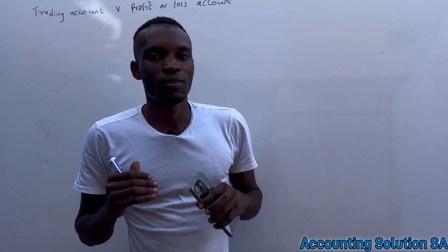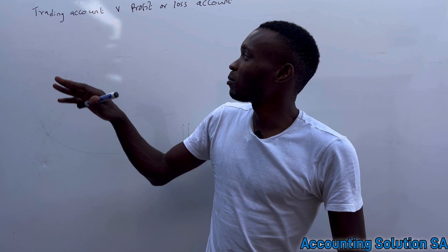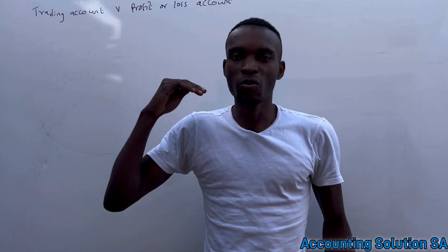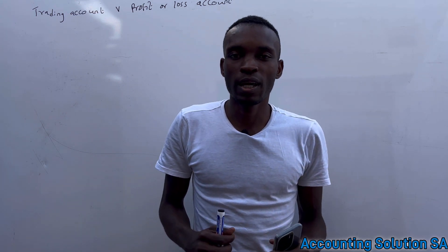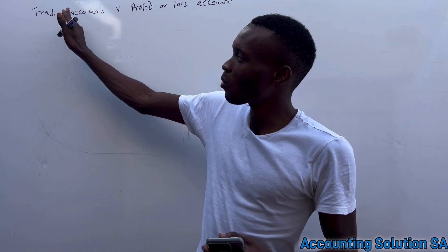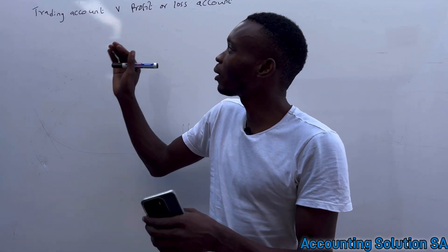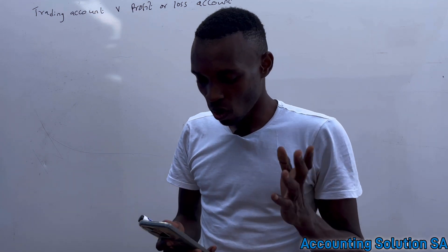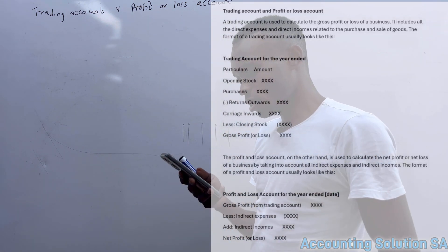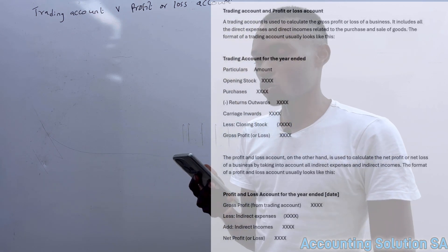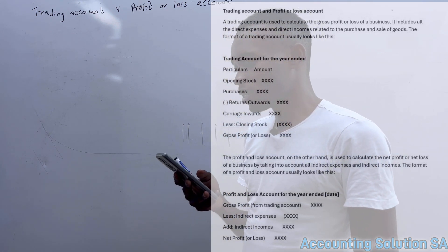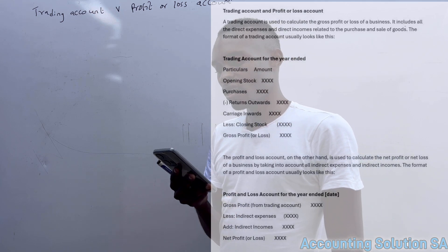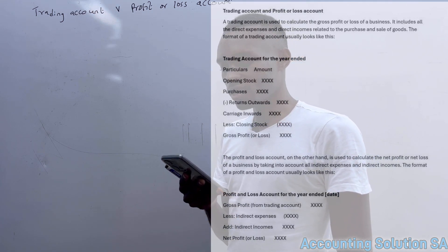In this video we are going to cover the difference between a trading account and a profit or loss account. Before we start with our example, I want us to understand what we are looking for when we prepare a trading account and what we are looking for when we prepare a profit or loss account. A trading account is used to calculate the gross profit or loss of the business. It includes all direct expenses and direct income related to the purchase and sales of goods.